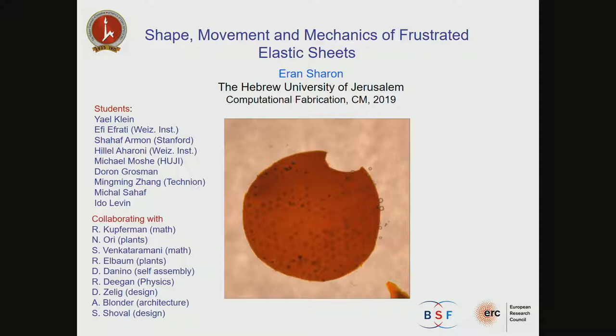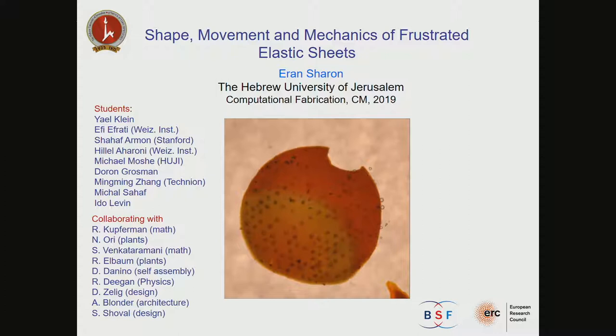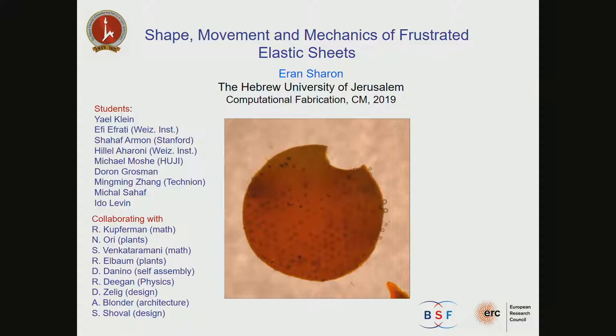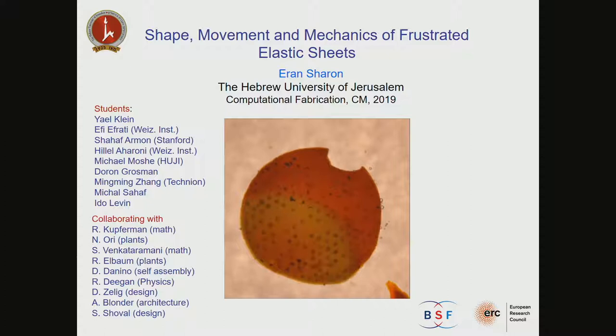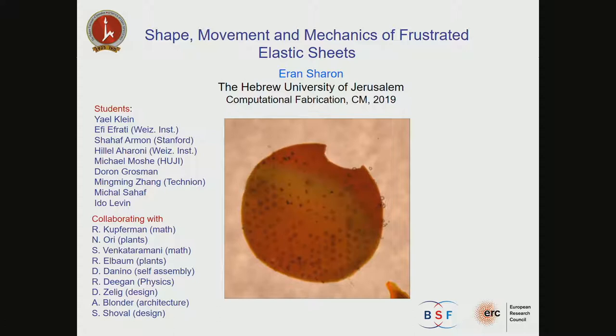I'm working at the Hebrew University in the physics department. I will talk about — I changed the title to a more general title, more relevant for this meeting — about shape, movement, and mechanics of what we call frustrated elastic sheets. It seems like a common interest for all of us is shape of solids and how we can manipulate shape in non-traditional ways. What we see here is this living-like thing which is a periodically, completely autonomous creature in solution. It takes three dimensions upon its pace and consumes energy from the environment.